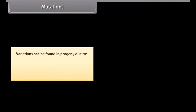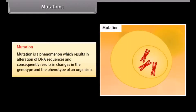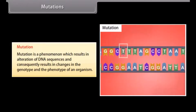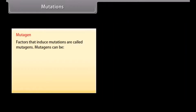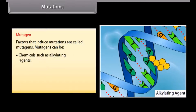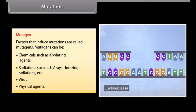Mutations. Variations can be found in progeny due to: recombinations after crossing over of chromosomes, and mutations. Mutation is a phenomenon which results in alteration of DNA sequences and consequently results in changes in the genotype and phenotype of an organism. Factors that induce mutations are called mutagens. Mutagens can be chemicals such as alkylating agents, radiations such as UV rays, ionizing radiations, viruses, and physical agents.